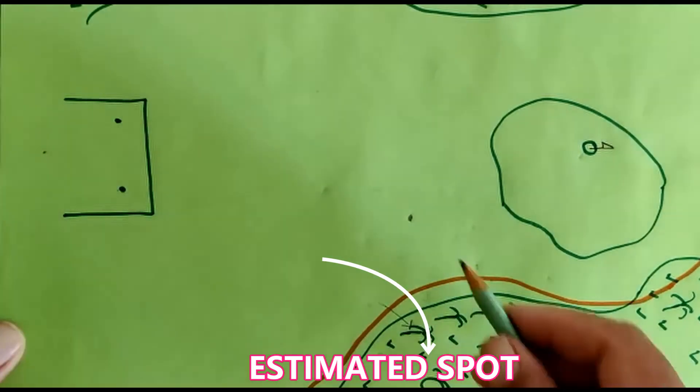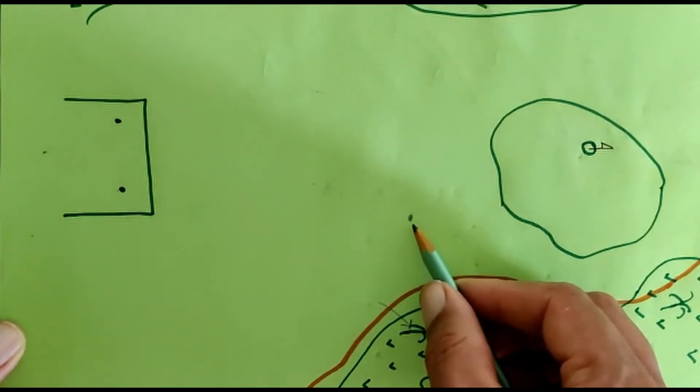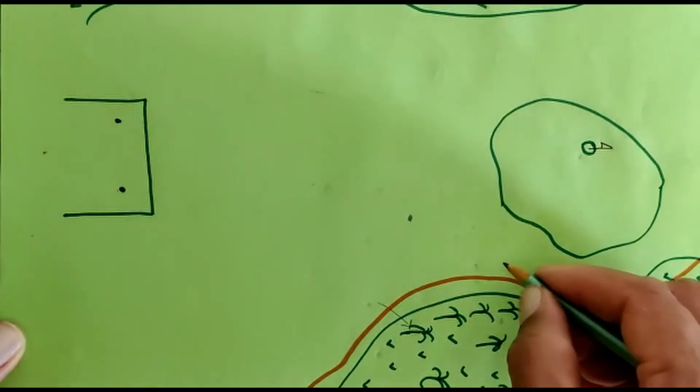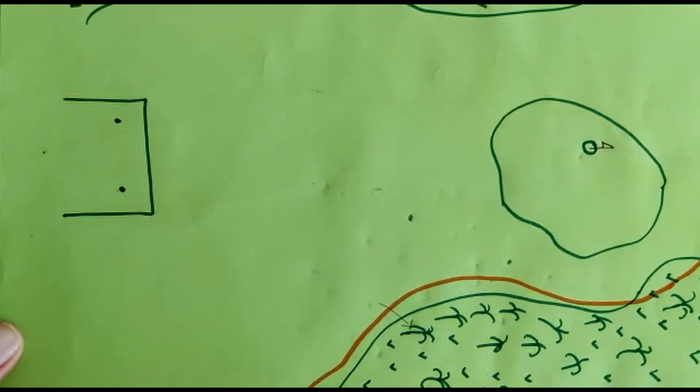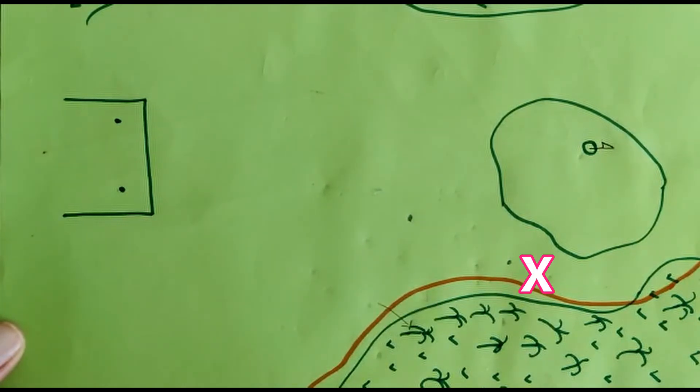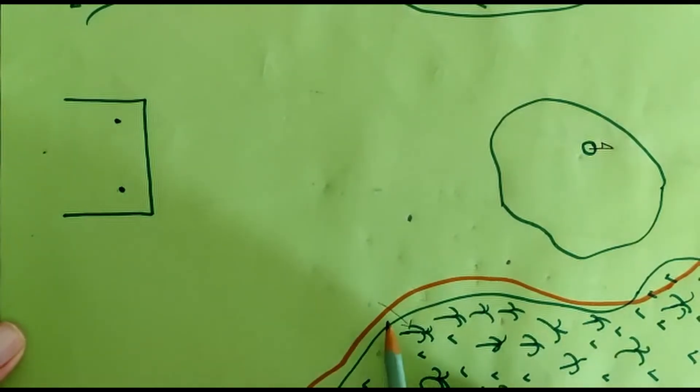So he comes and takes a shot with the provisional ball. While going ahead, he spots a ball somewhere here and finds that this is his original ball. Is he allowed to play this ball? No.